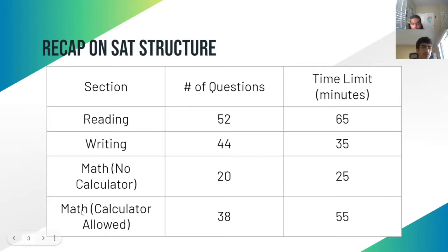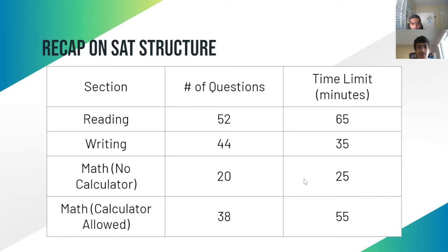For the math calculator section you have 38 questions and 55 minutes, which leaves you with about 1 minute and 26 seconds per question. So the math calculator section has the most seconds per question on the SAT, and the writing section has the least seconds per question.